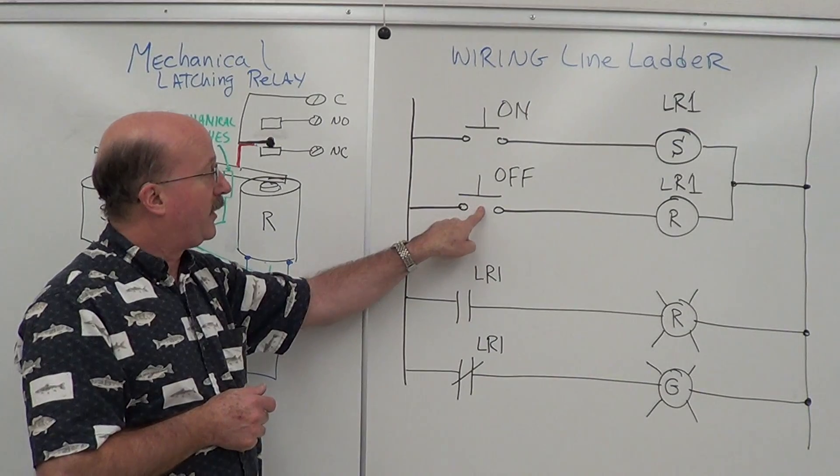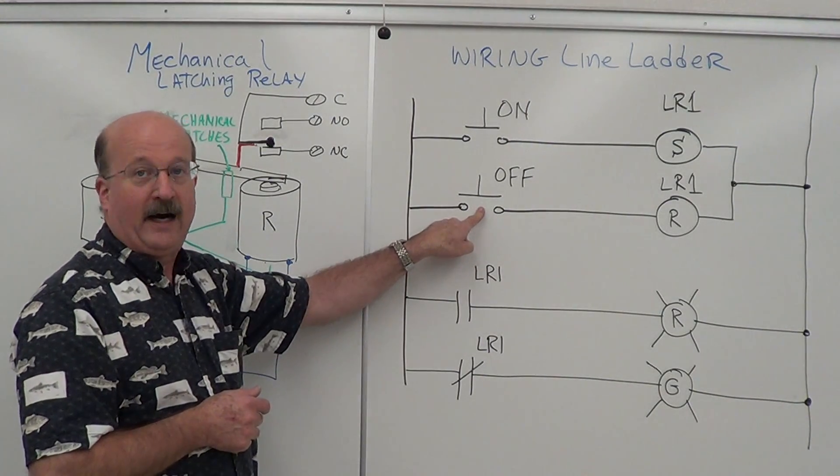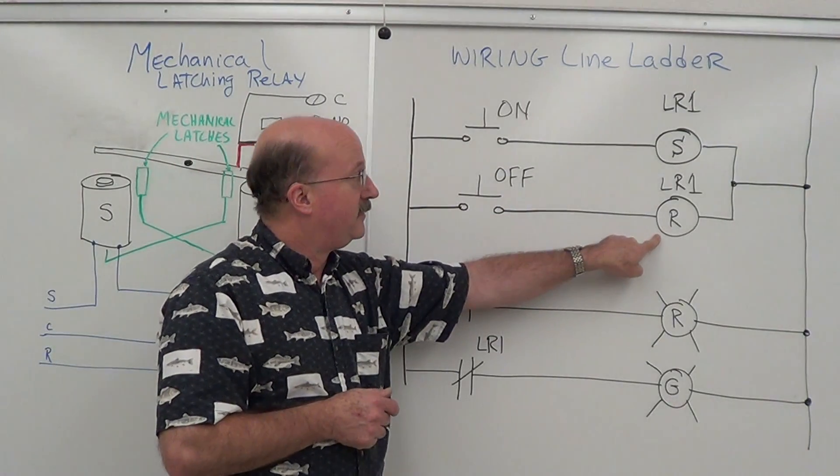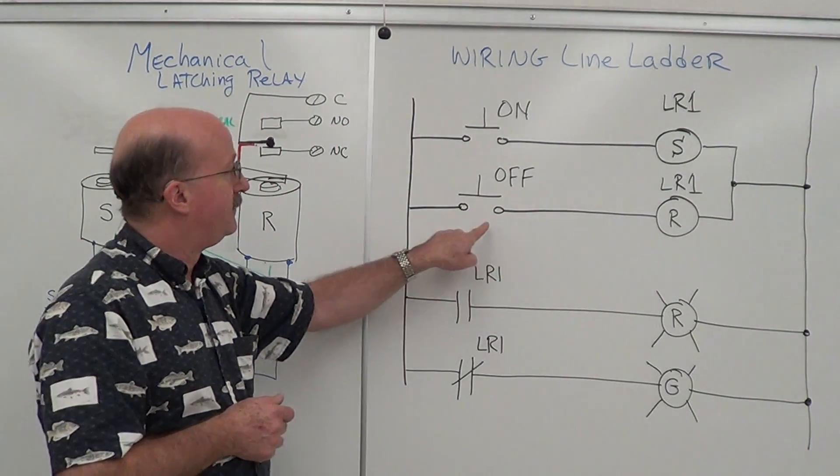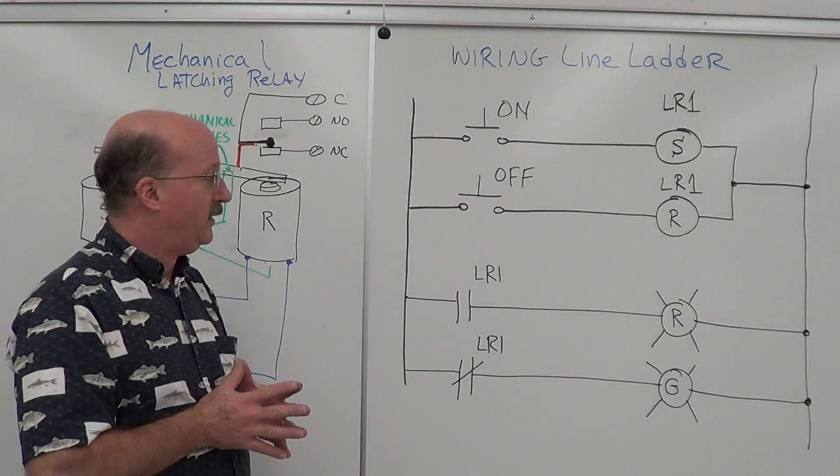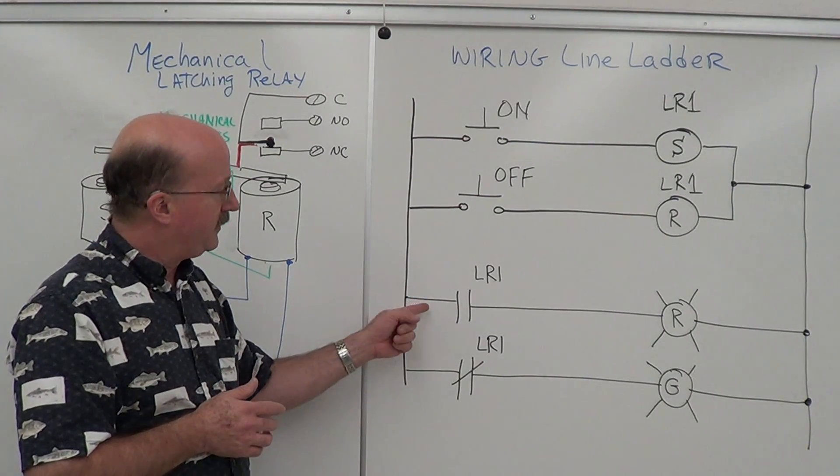If I come and want to turn the relay off, I'll push this button, energize the off coil, and then I can release the button and the relay is off.